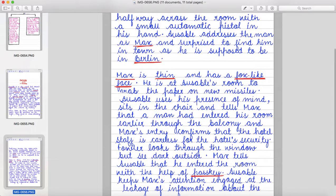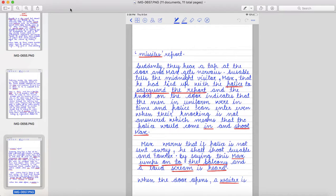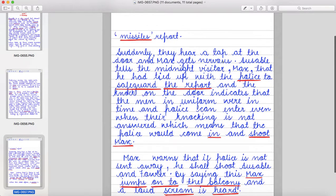Ausable addresses the man as Max and surprised to find him in town as he is supposed to be in Berlin. Max is thin and has a fox-like face. He is at Ausable's room to grab the paper on new missiles. Ausable uses his presence of mind and sits in the chair and tells Max that a man had entered his room earlier through the balcony and Max's entry confirms that the hotel staff is careless for the hotel's security.